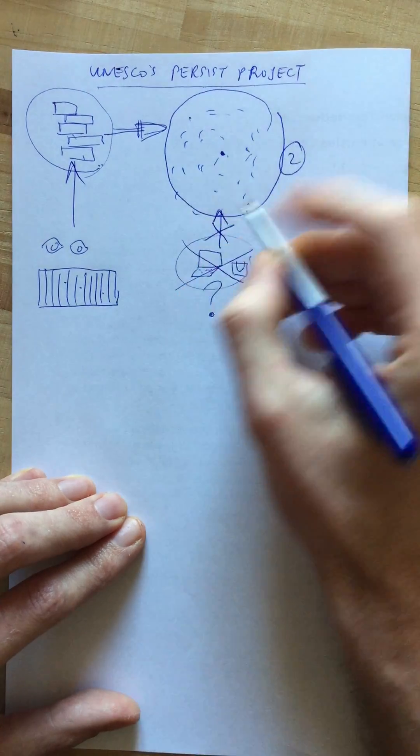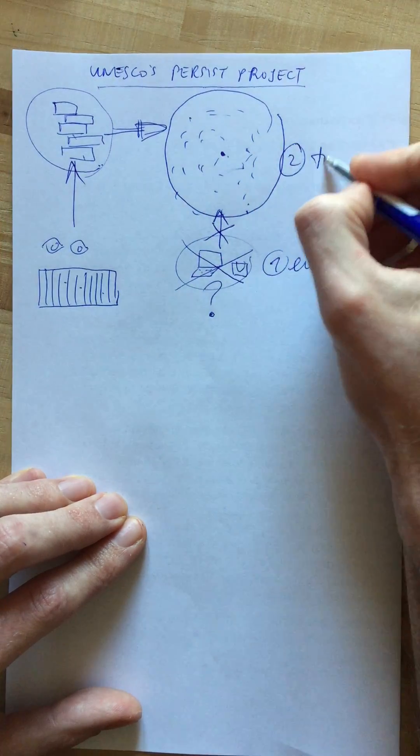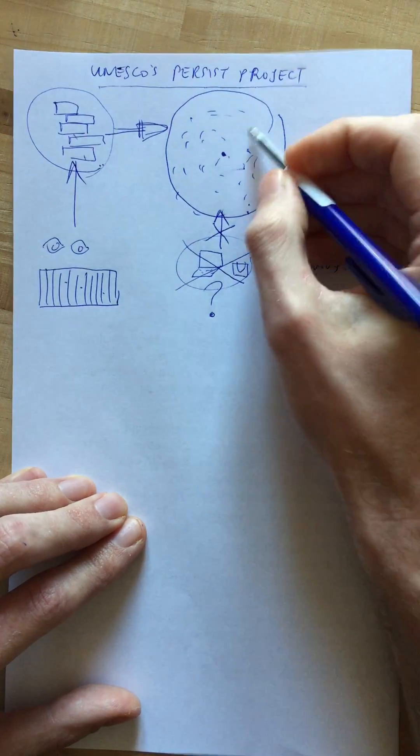The second reason why we lose access to digital documents is because in the digital information society there's too much information to keep access to everything.